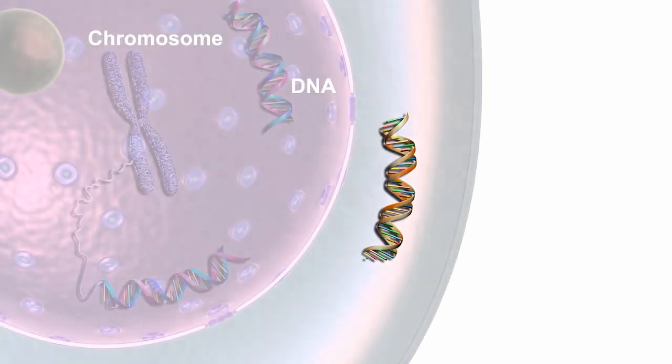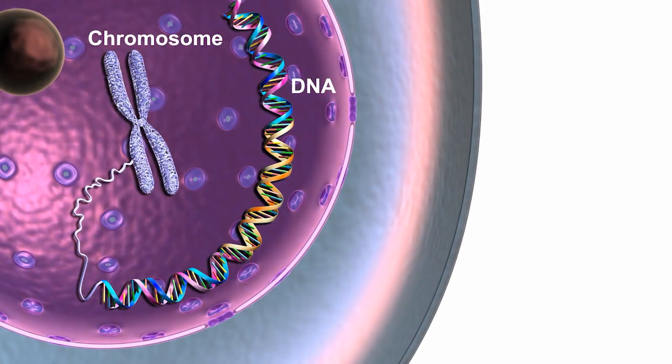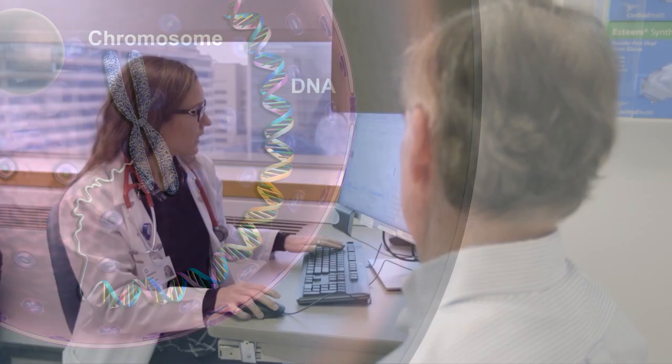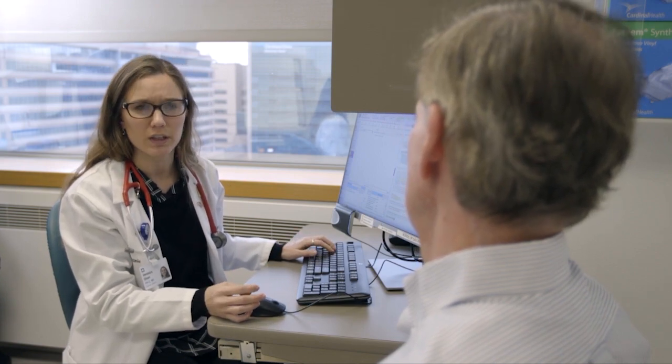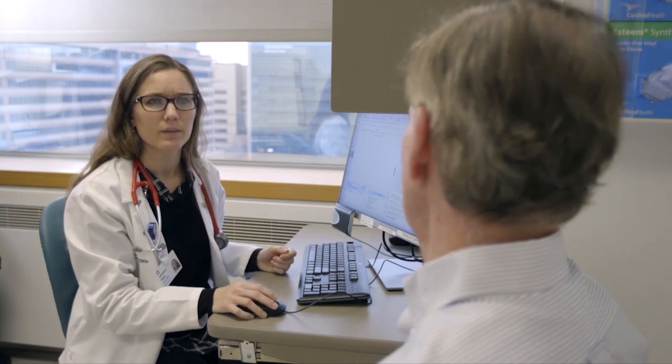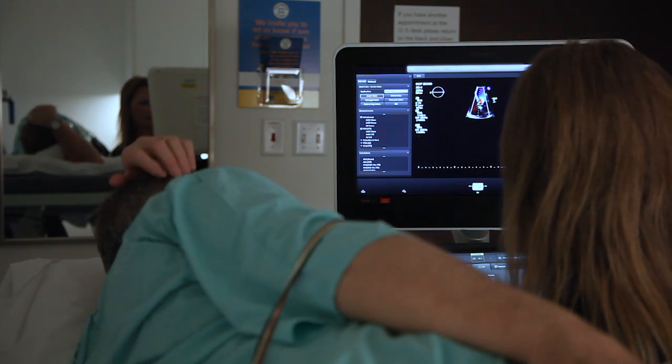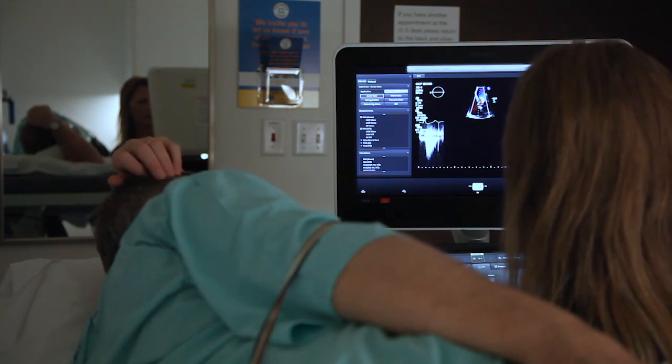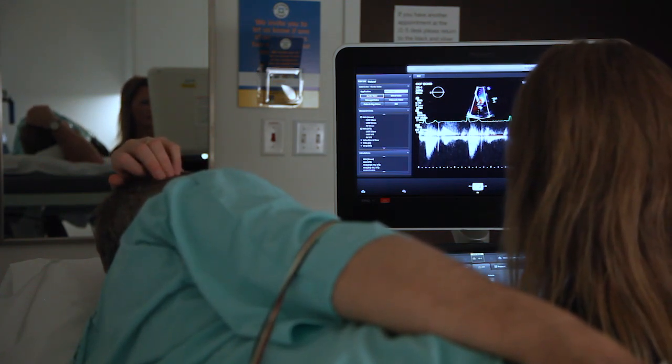How accurate is genetic testing for aortic disease? We currently know about 30% of the genetic causes of aortic disease. More genetic causes will be found in the future. Please be aware that a negative genetic test does not mean that there is no genetic risk. Even if genetic testing is normal now, family members should all undergo imaging of their aortas.